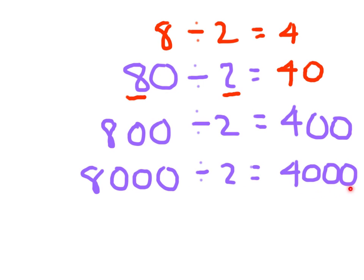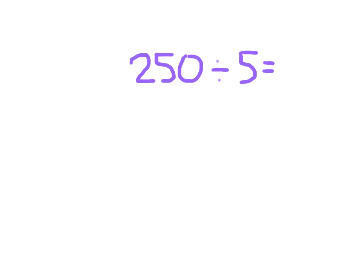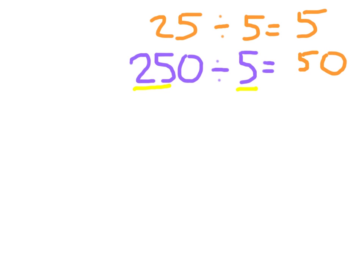Do you recognize a pattern as we're working here? Let's continue. Here we have 250 divided by 5. The basic fact that will help us is 25 divided by 5. So we write that basic fact: 25 divided by 5 is 5. We're talking about 25 tens divided by 5, so 25 tens divided by 5 is 5 tens, which is written 50. And 2,500 divided by 5 would be 500.